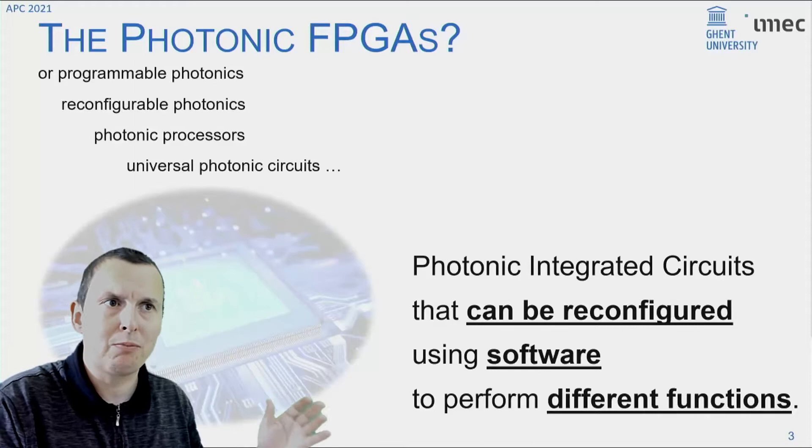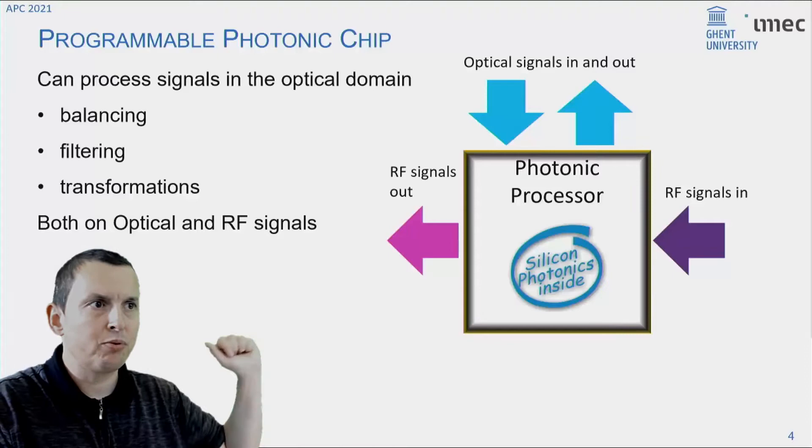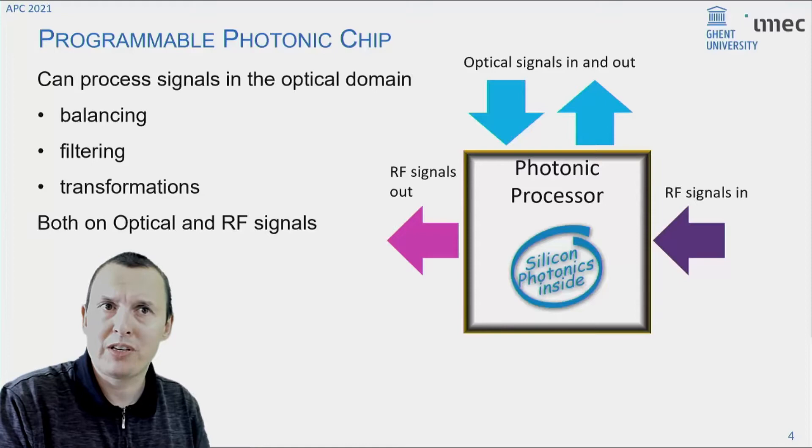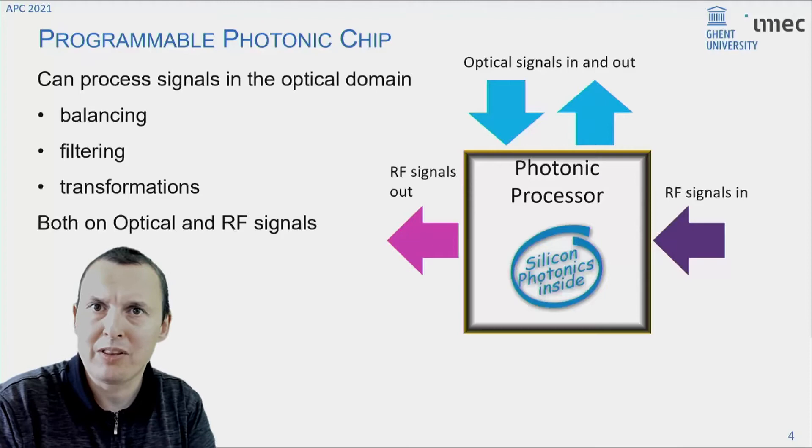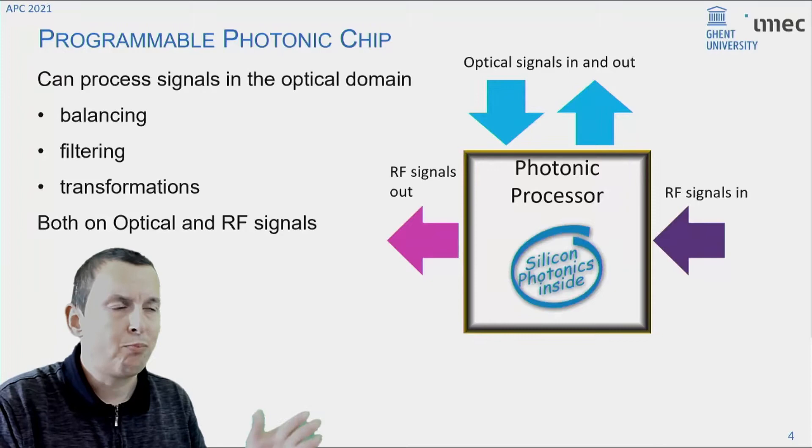So they can play a similar role as FPGAs and microcontrollers have played for the development and the industrial widespread use of electronics. Such a large-scale general-purpose programmable processor would look a bit like this. It would be a chip with optical inputs and outputs, but also with microwave inputs and outputs to process high-speed electronic signals.